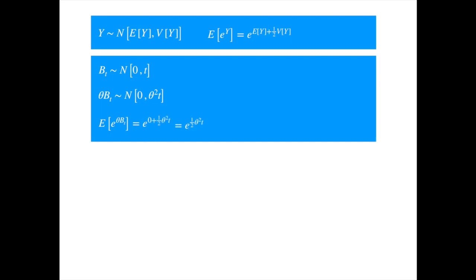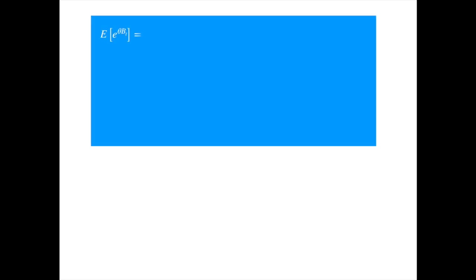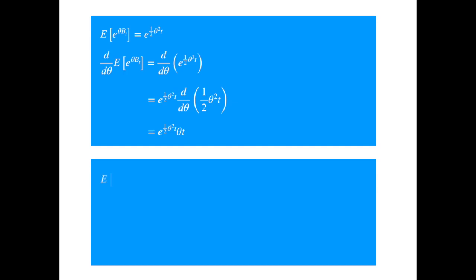Now let's calculate the first four moments. Differentiating both sides of the moment-generating function with respect to theta, and applying the chain rule and evaluating the derivative, we get an expression. To isolate the first moment, we set theta equal to zero. Substituting the expression and then setting theta equal to zero, we see that the first moment is zero.